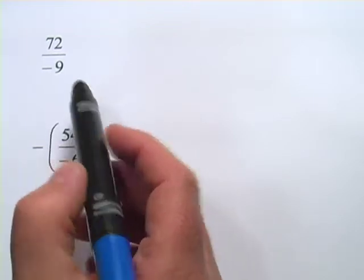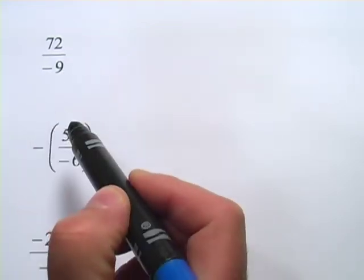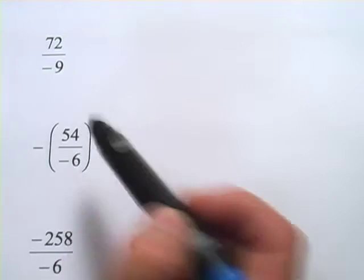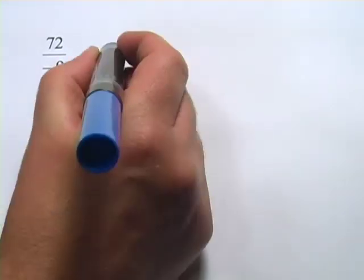Let's take a look at the first one. It has 72 divided by negative 9. 72 divided by 9 is 8, and since there's one negative sign here, that's going to come along.